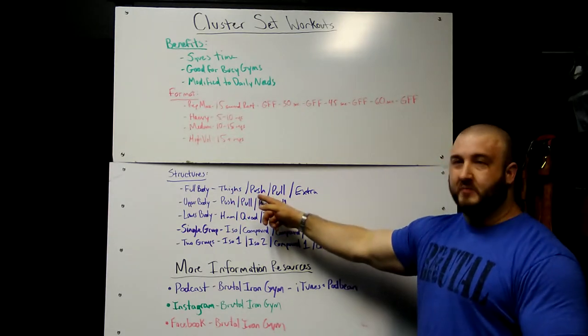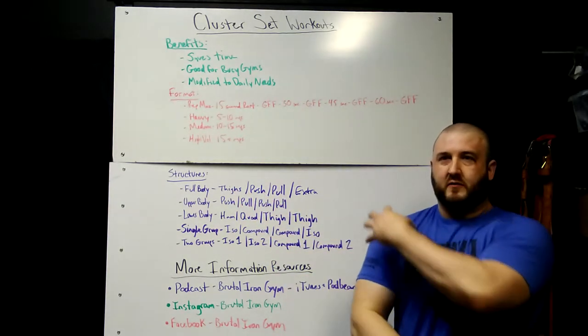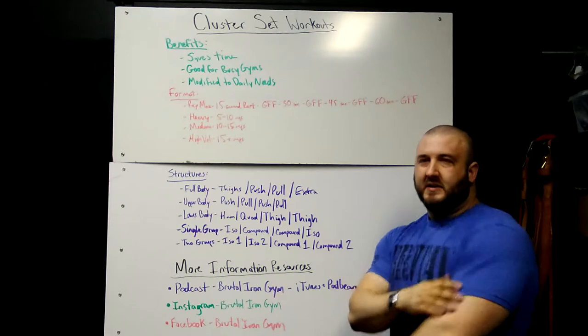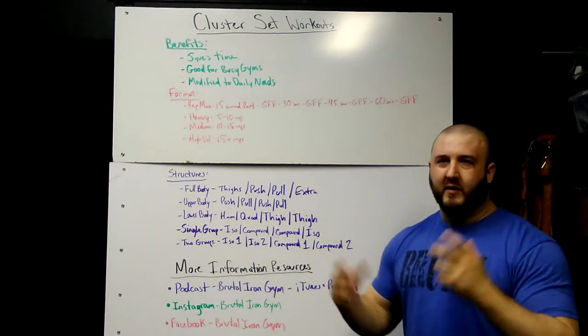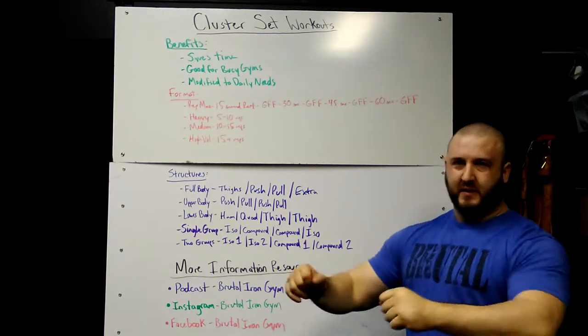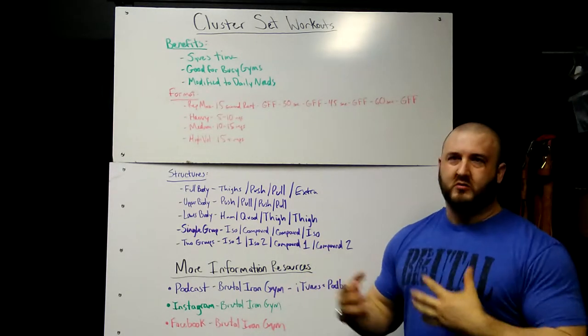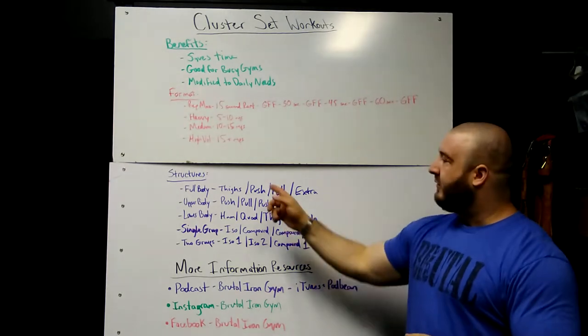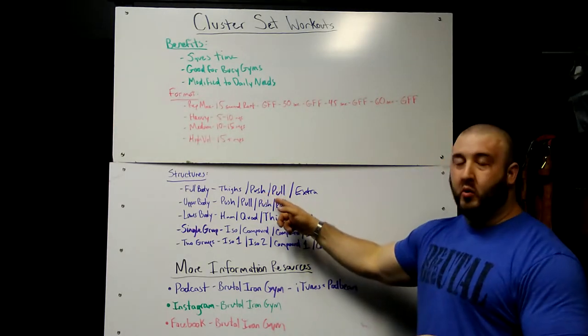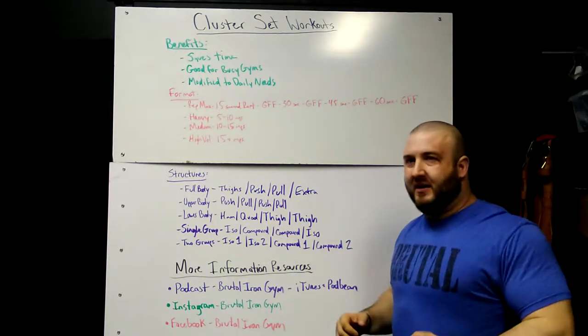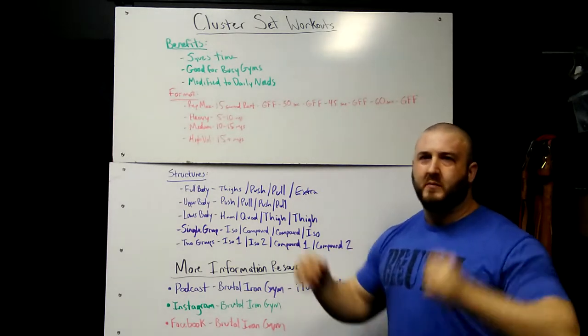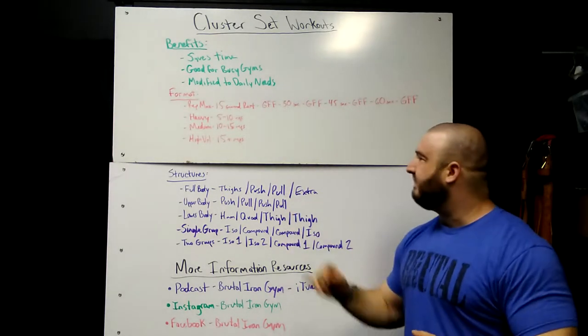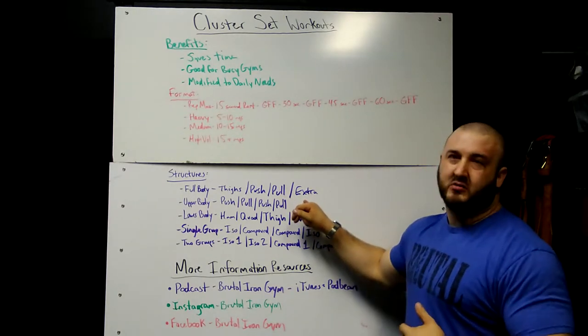Since it's full body, that takes care of our legs. We then do push muscles, which is our chest, front of our shoulders, and triceps. That might be a dumbbell press, bench press, maybe even an overhead press if you're more of an overhead sport or if you want more shoulders rather than chest. Then you go to pull muscles, which is your back, back of your shoulders, and biceps. You can do a heavy row, maybe pull-ups, pull-downs, stuff like that.